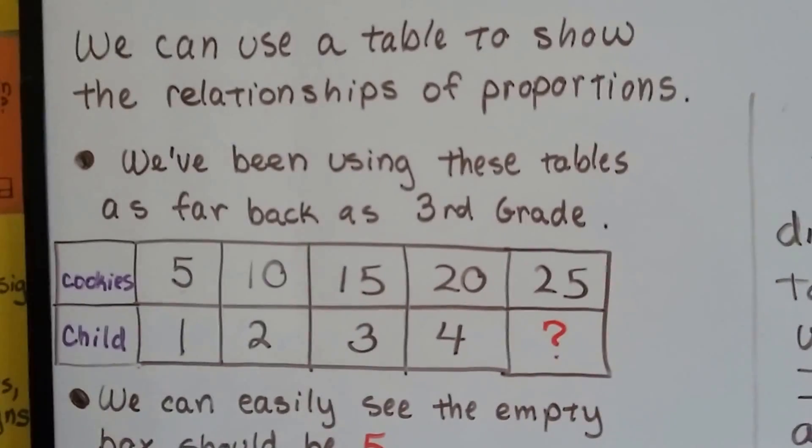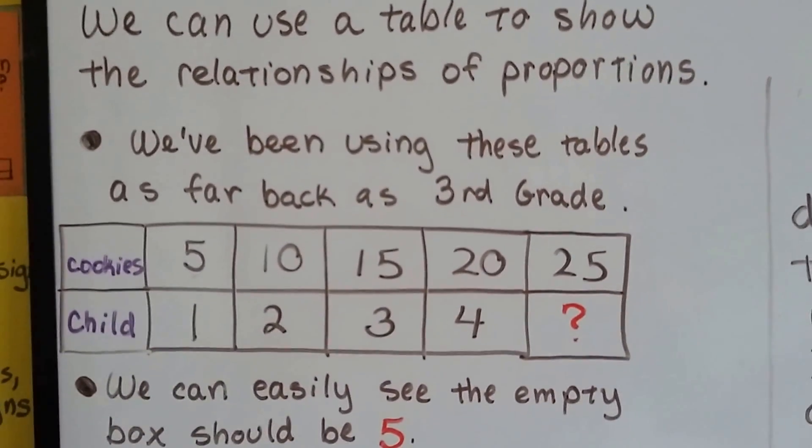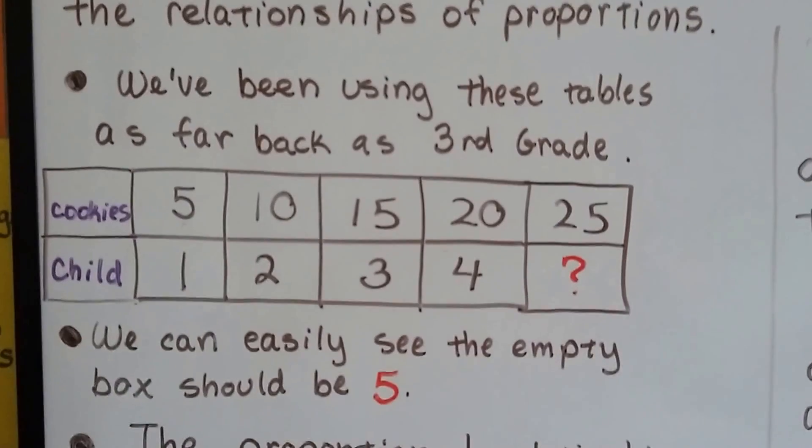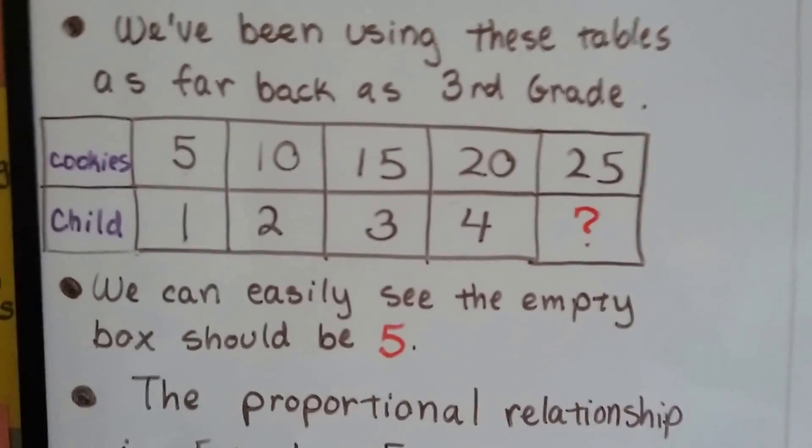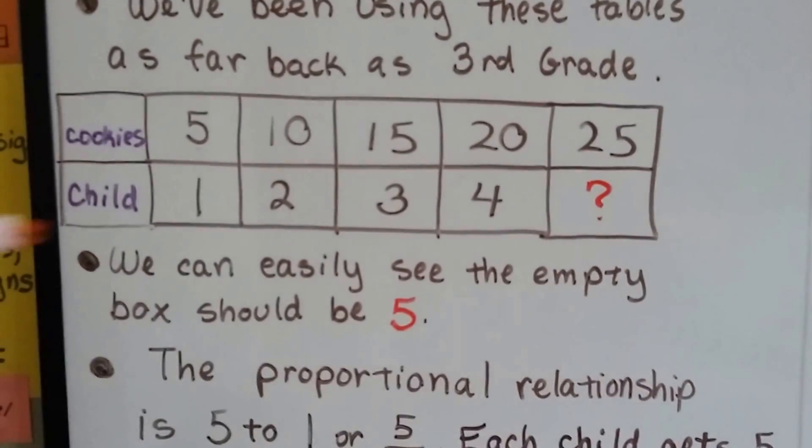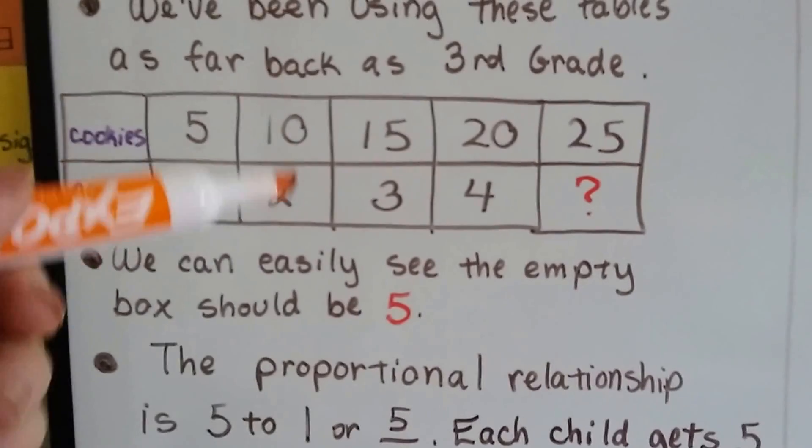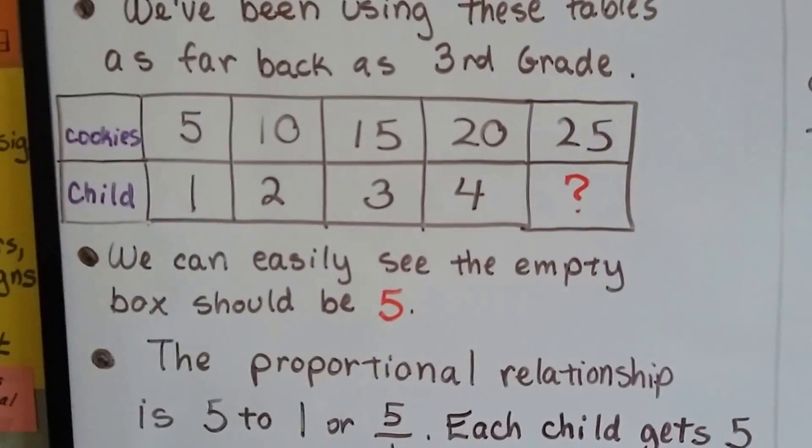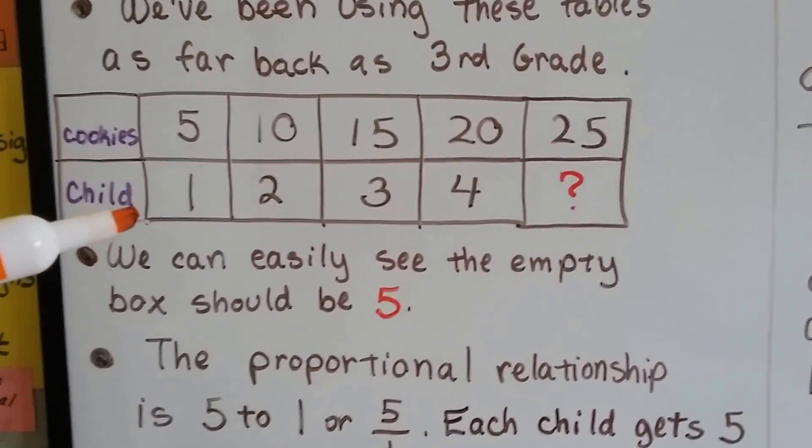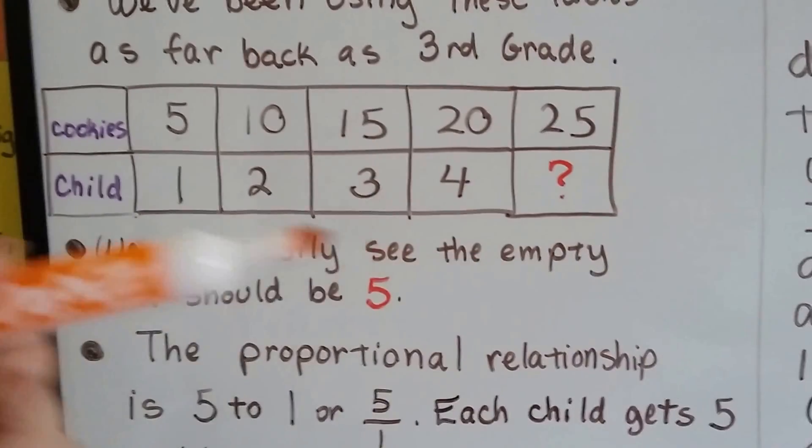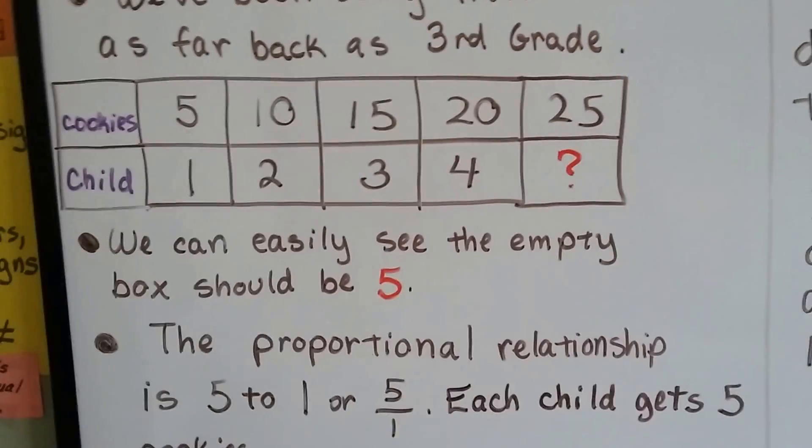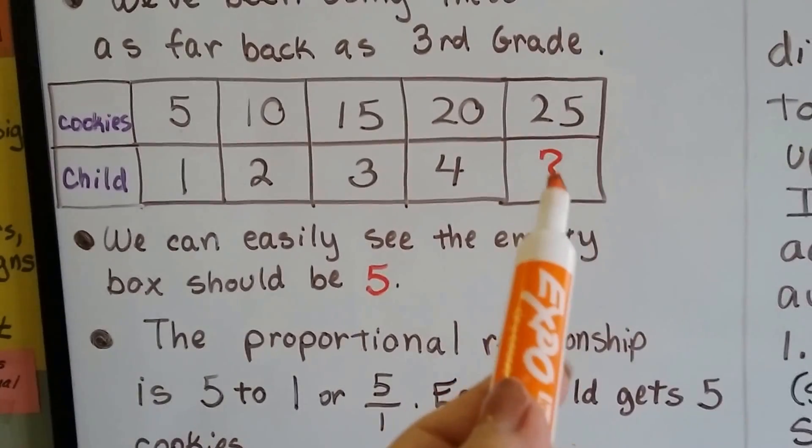We can use a table to show the relationships of proportions. We've been using these tables as far back as 3rd grade. Cookies versus children - if 5 cookies is to 1 child, we could fill this table out using that ratio, that proportion. We can also see that there's a pattern going on in both of these.